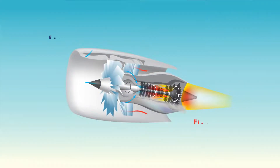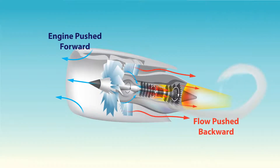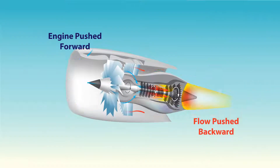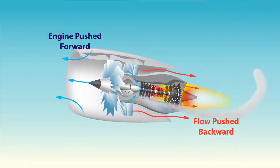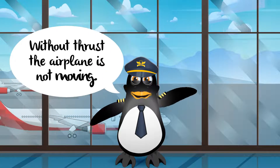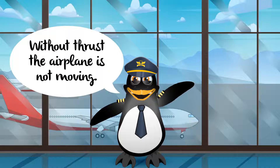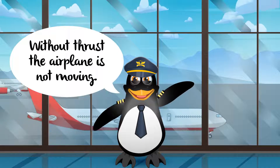In a jet, hot gases are rapidly expelled backwards, which pushes the engines forward. Without thrust, the airplane is not moving.